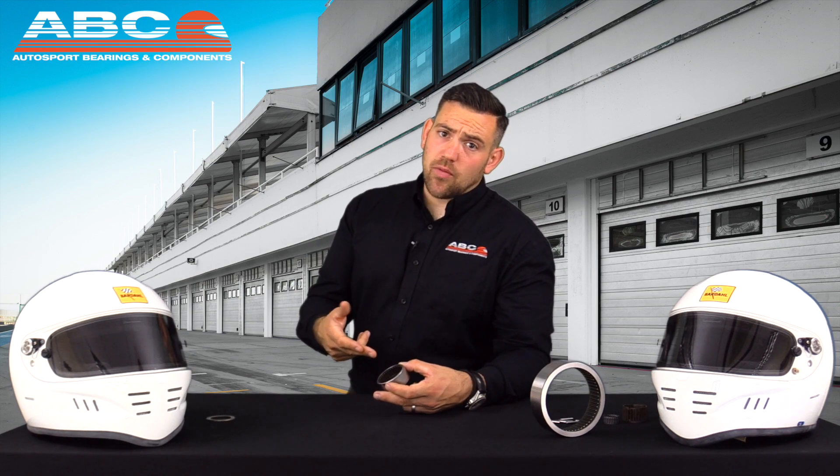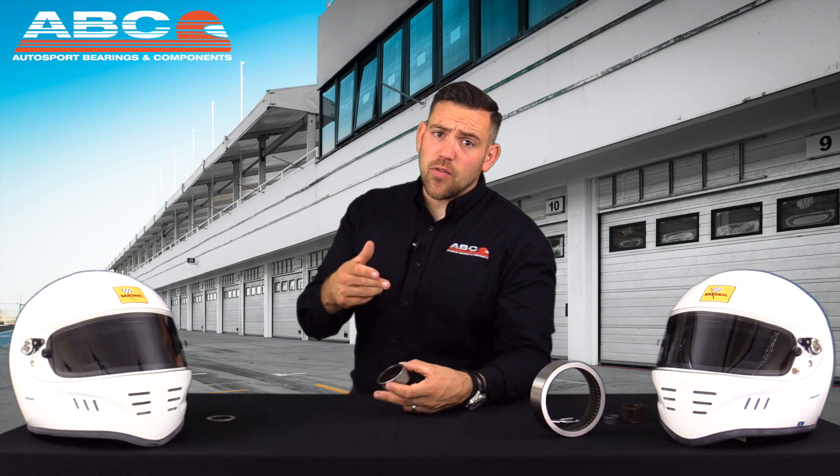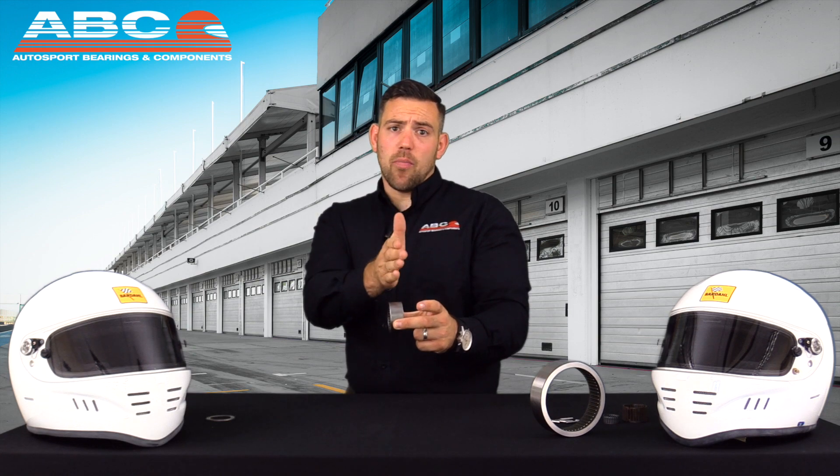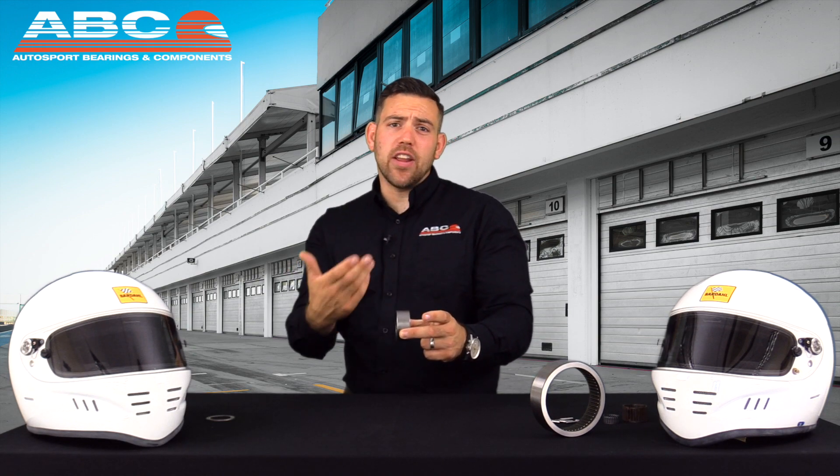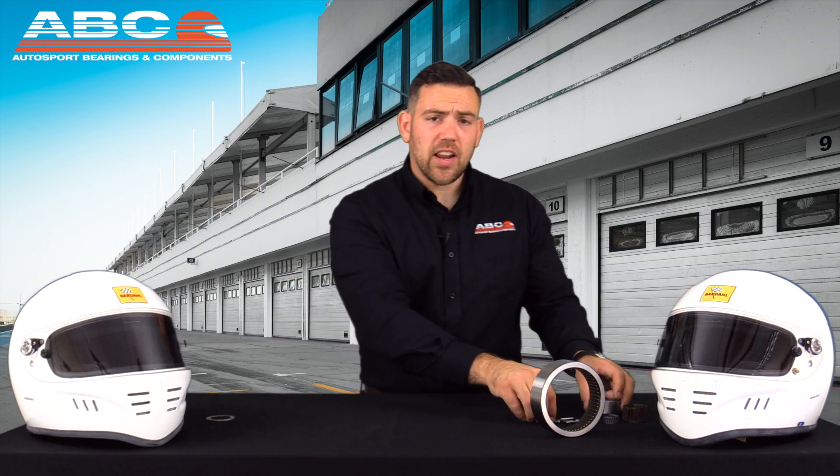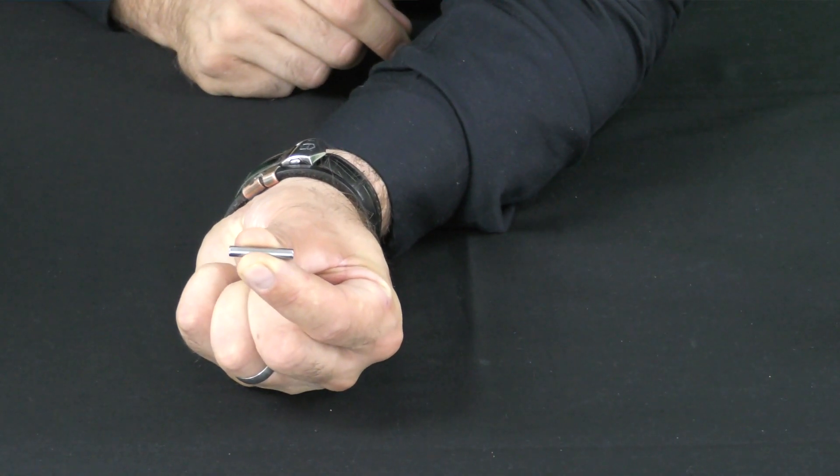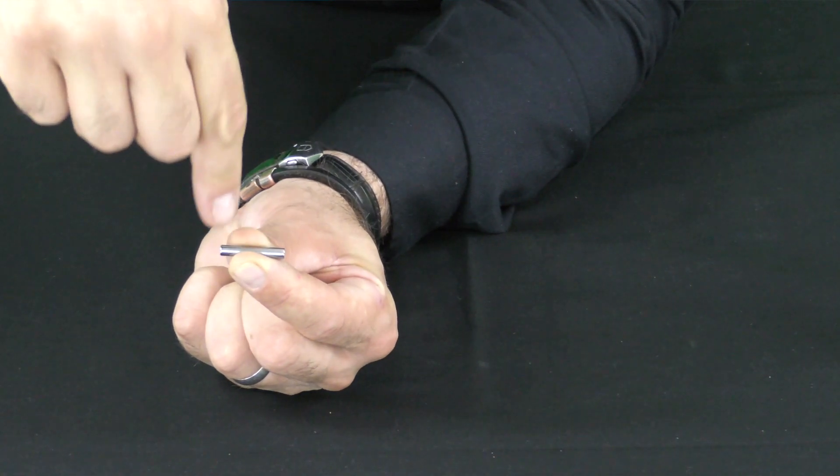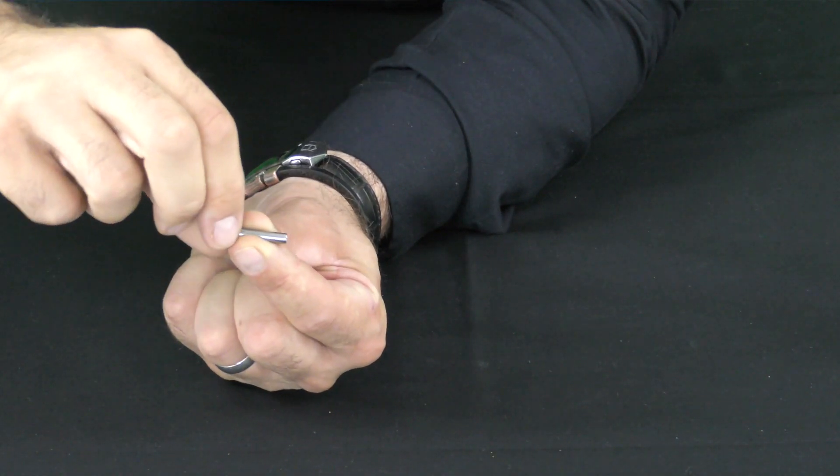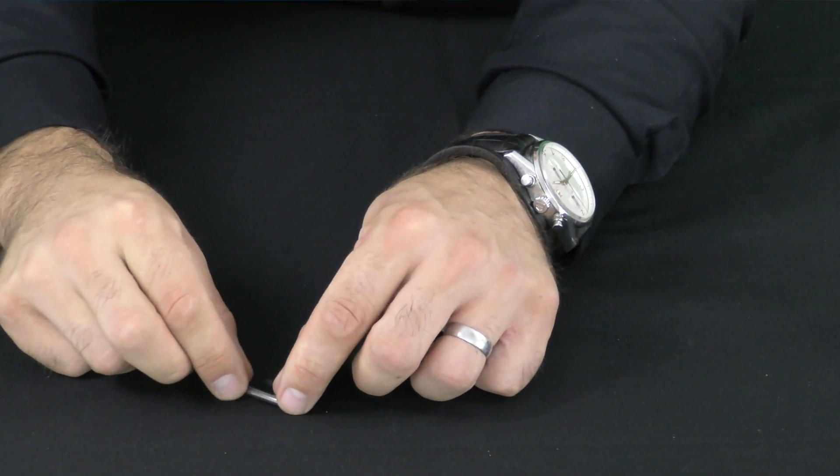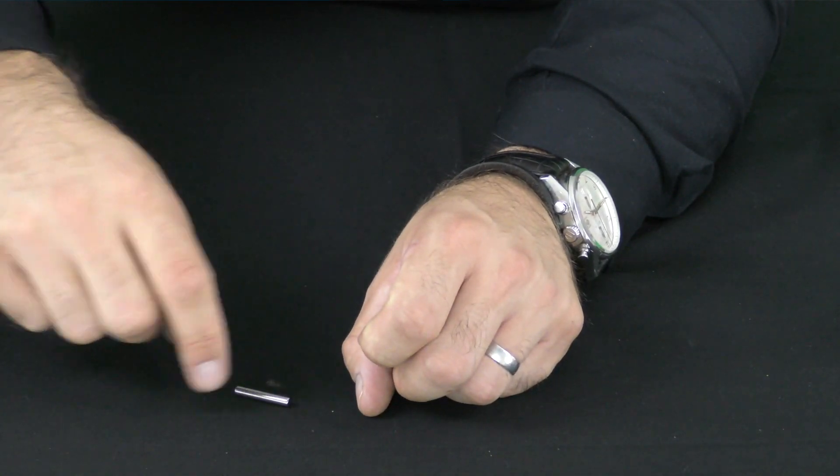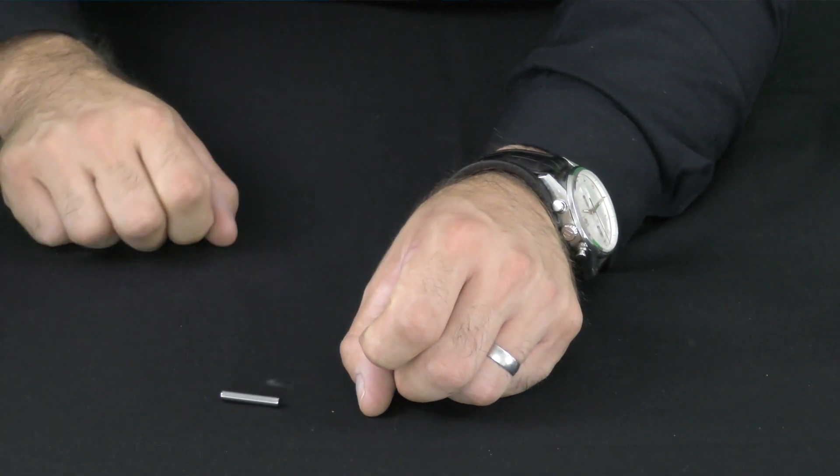The other issue that you have with needle roller bearings is that if you do get an edge load on the bearing itself you can create high stresses. If we take a close look at this using this needle roller, if I'm holding that needle roller like so and I get a high edge load then what the needle roller is going to do is skew which is going to create high stress at the end of that needle roller.